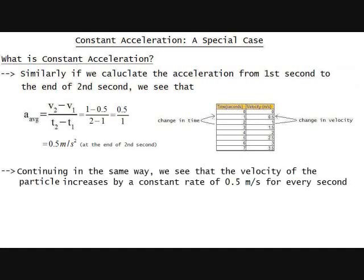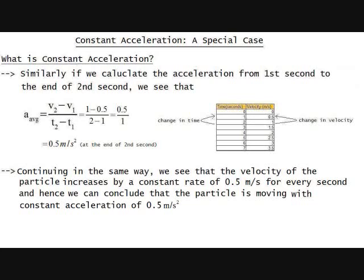Continuing in the same way, we see that the velocity of the particle increases by a constant rate of 0.5 meters per second for every second. Hence we can conclude that the particle is moving with a constant acceleration of 0.5 meters per second squared.